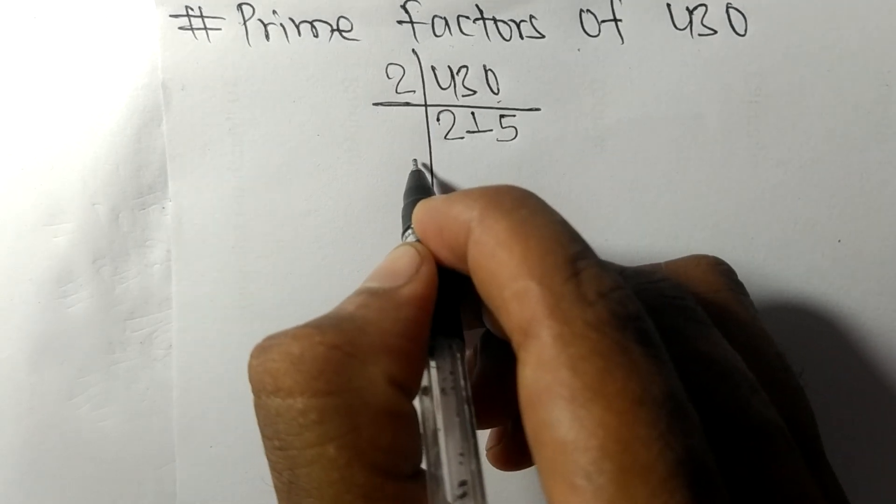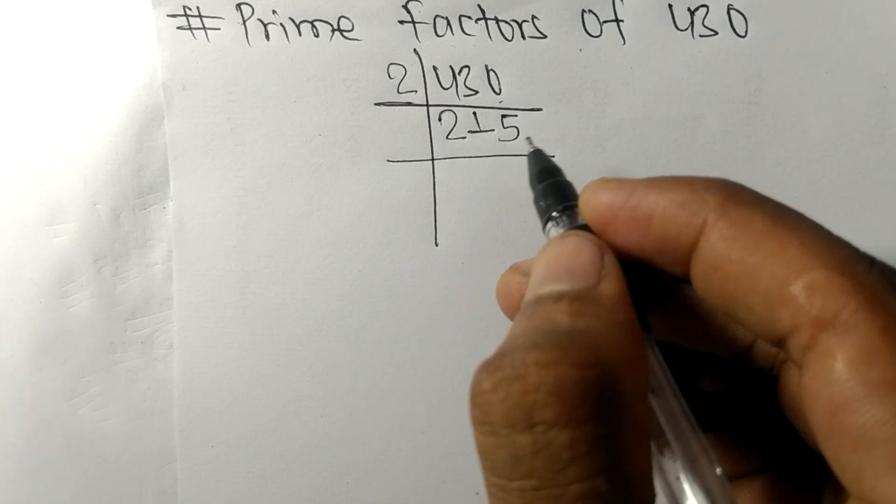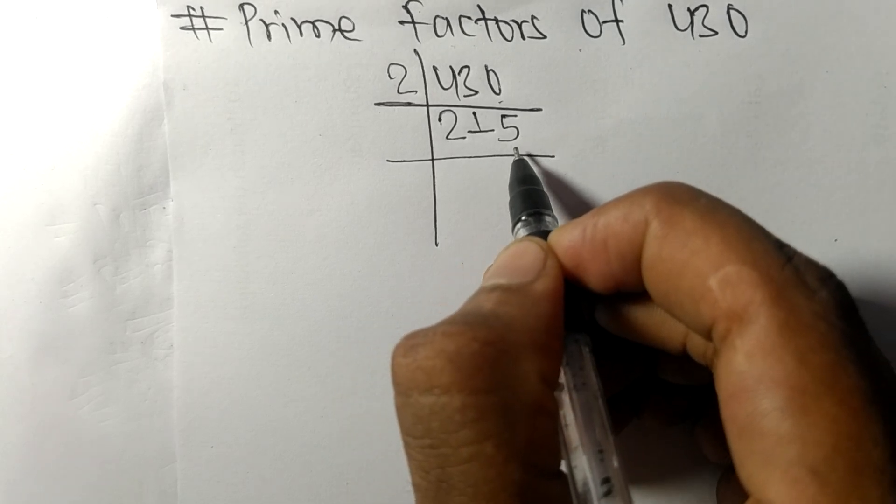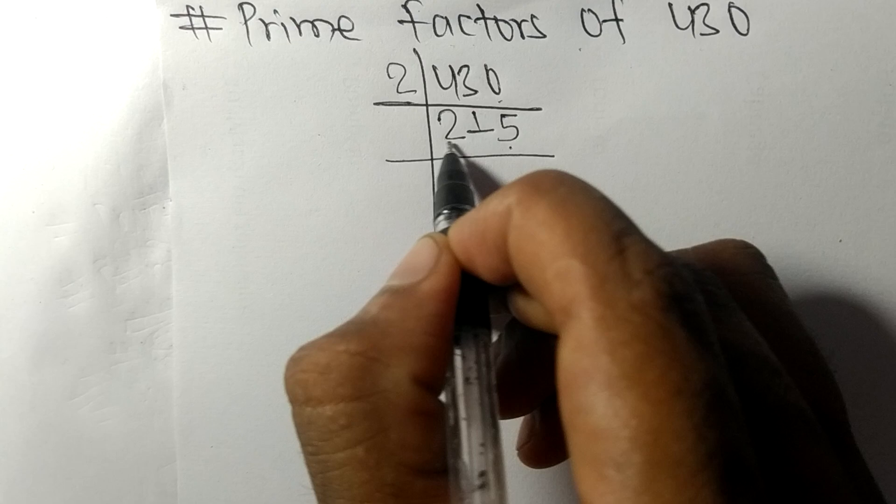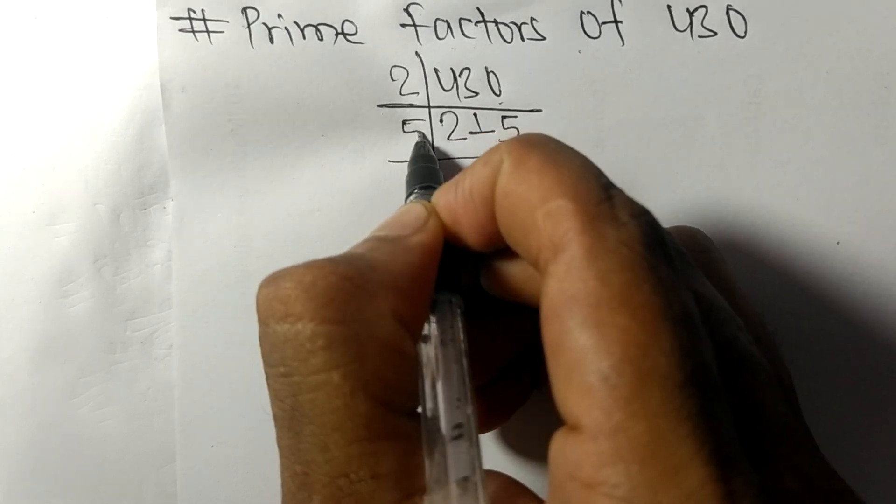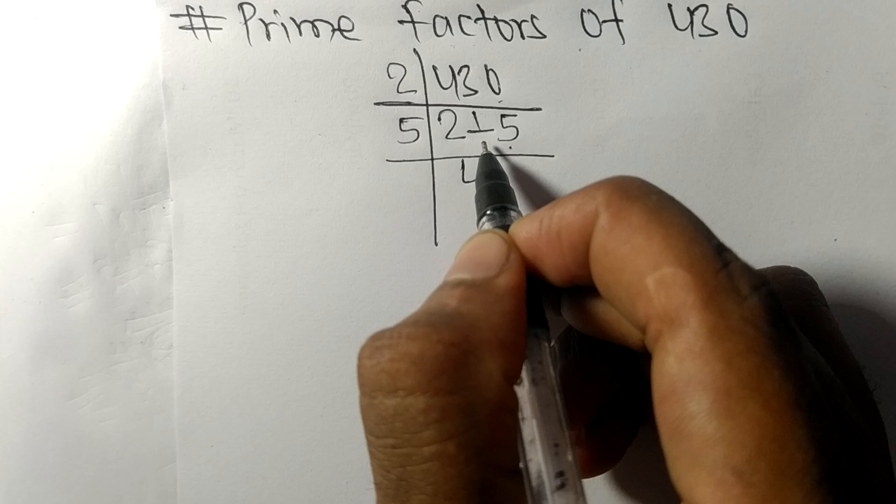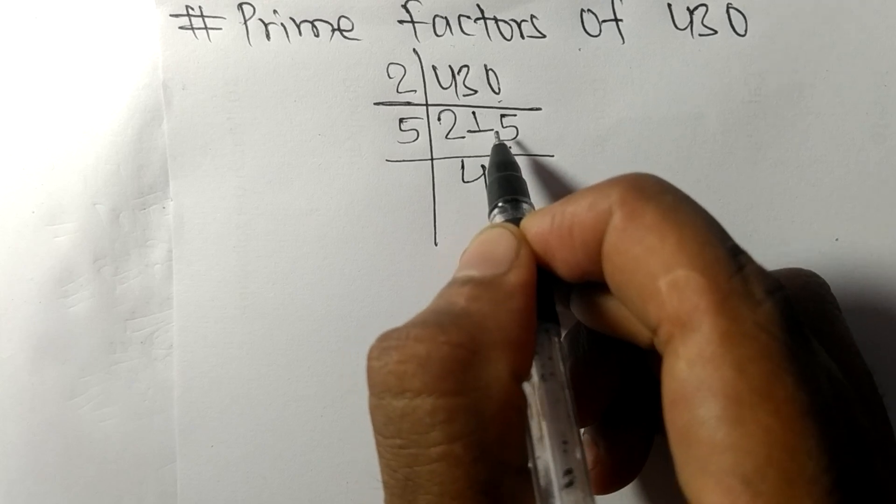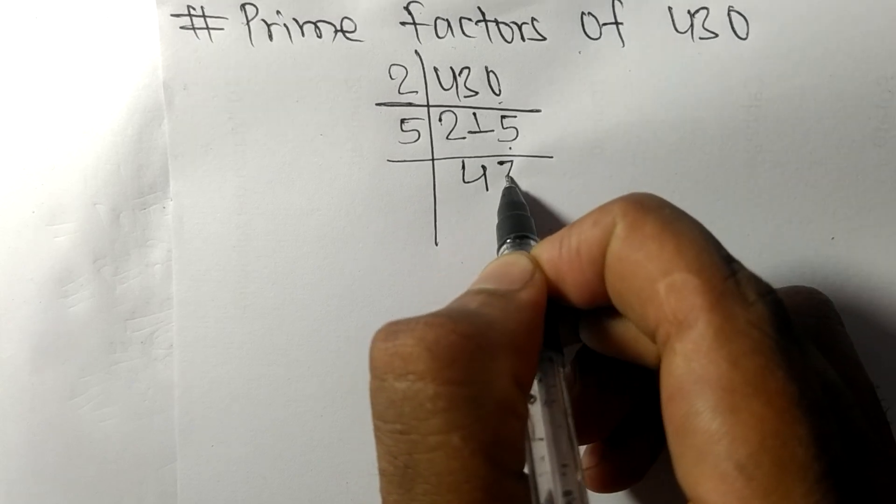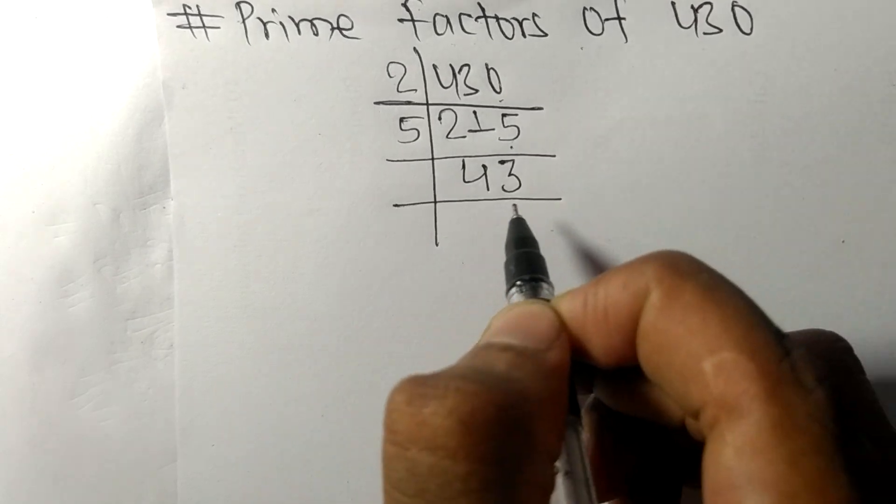Now we got here 215 and at last it contains five, so it is divisible by 5. Five times four means 20, remainder one, one five fifteen. So five times three means fifteen.